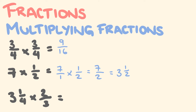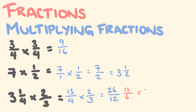Three and a quarter converted to an improper fraction: three times four is twelve, plus one is thirteen — so thirteen over four, multiplied by two over three. Thirteen times two is twenty-six, four times three is twelve. We can simplify: two goes into both twenty-six and twelve, giving thirteen over six. Converting to a mixed number: thirteen divided by six is two with one left over, so the answer is two and one-sixth.